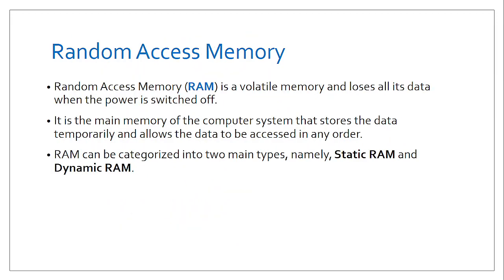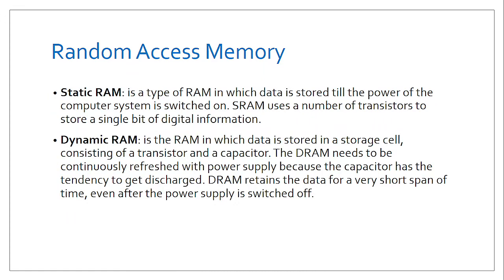When we talk about main memory, we refer to it as RAM. RAM is volatile — you can easily lose your data when the power is switched off. We have different categories of RAM: static RAM and dynamic RAM. Static RAM doesn't store information when power is switched off. Dynamic RAM has some sort of capacitors that can retain some data even if the power goes, but it needs to be continuously refreshed with power because the capacitor has a tendency to get disturbed.